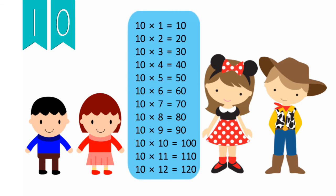10 x 1 equals 10, 10 x 2 equals 20, 10 x 3 equals 30, 10 x 4 equals 40, 10 x 5 equals 50, 10 x 6 equals 60, 10 x 7 equals 70, 10 x 8 equals 80, 10 x 9 equals 90, 10 x 10 equals 100.